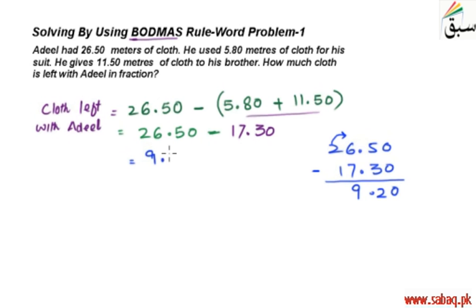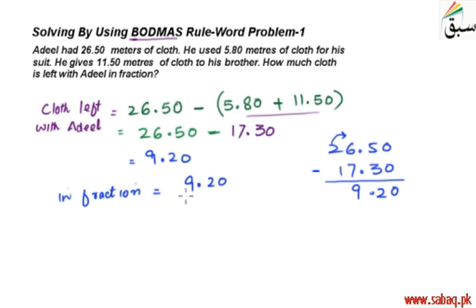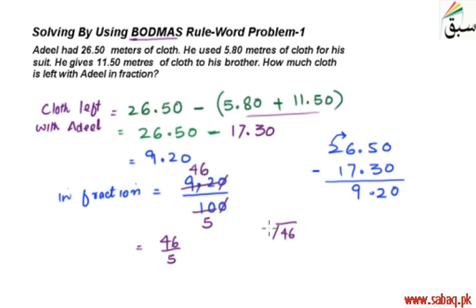So 9.20 meters of cloth is left with Adil. But since we need to express this in fraction: 9.20 as a fraction — we have one decimal place, so we write 920 over 100, which simplifies. Dividing: 46 by 5. Then 46 divided by 5 gives 9 remainder 1, so the answer as a mixed fraction is 9 and 1/5.